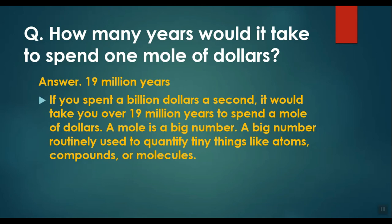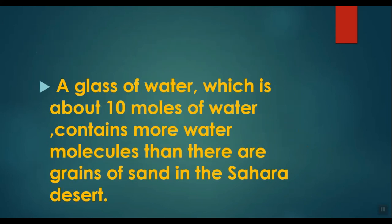A mole is a big number routinely used to quantify tiny things like atoms, compounds, or molecules. A glass of water, which is about 10 moles of water, contains more water molecules than there are grains of sand in the Sahara Desert. So the number of molecules in 10 moles of water exceeds the number of grains of sand in the entire Sahara Desert.